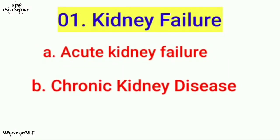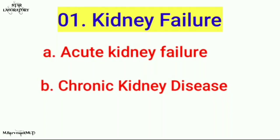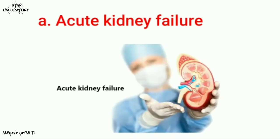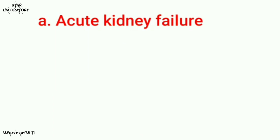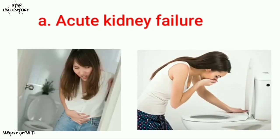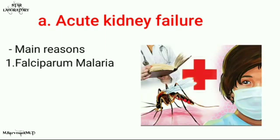There are two types of kidney failure. The first is acute kidney failure and the second is chronic kidney disease or chronic kidney failure. Acute kidney failure is a sudden onset disease condition that happens due to various reasons. The main symptoms of acute kidney failure include vomiting and diarrhea. The first cause is falciparum malaria.